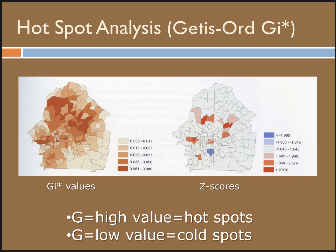A high z-score and a small p-value for a feature indicates spatial clustering of high values. A low negative z-score and small p-value indicates spatial clustering of low values. The higher or lower the z-score, the more intense the clustering. A z-score near zero indicates basically no apparent spatial clustering — randomness.